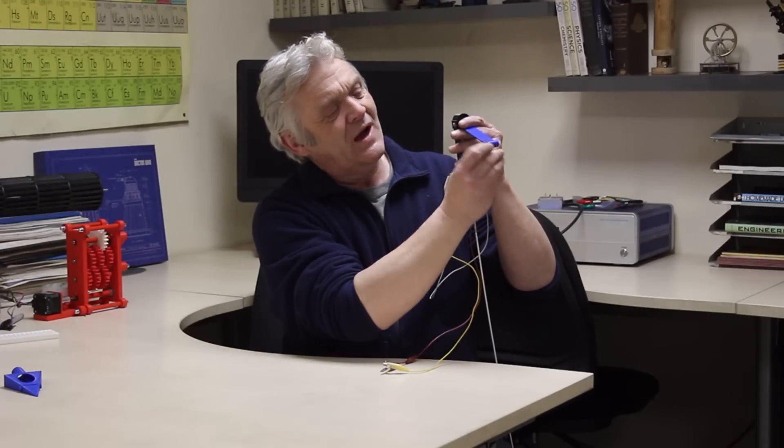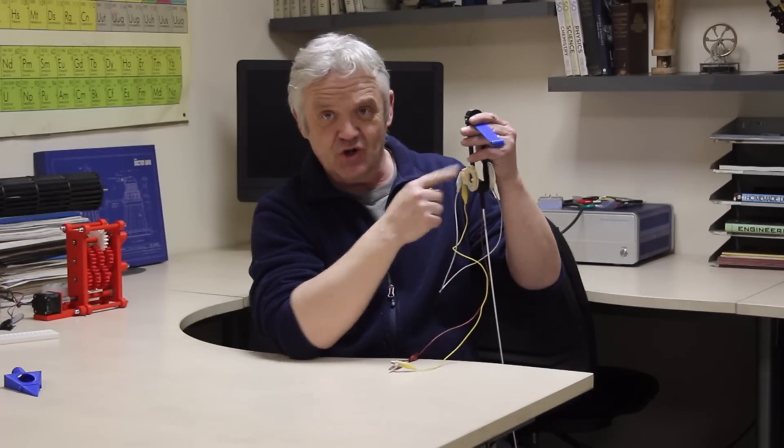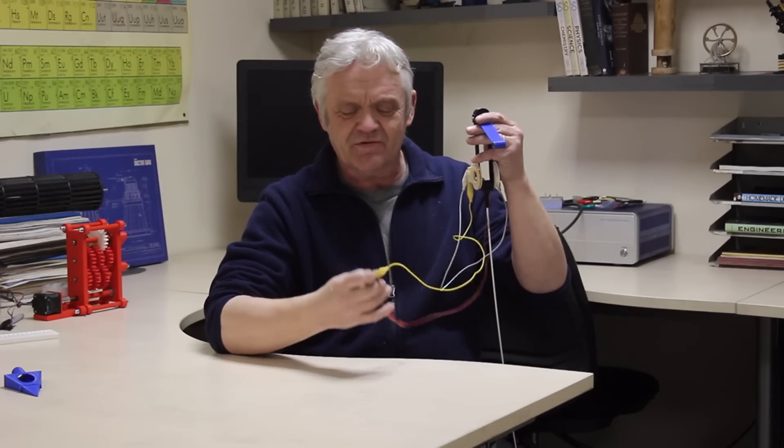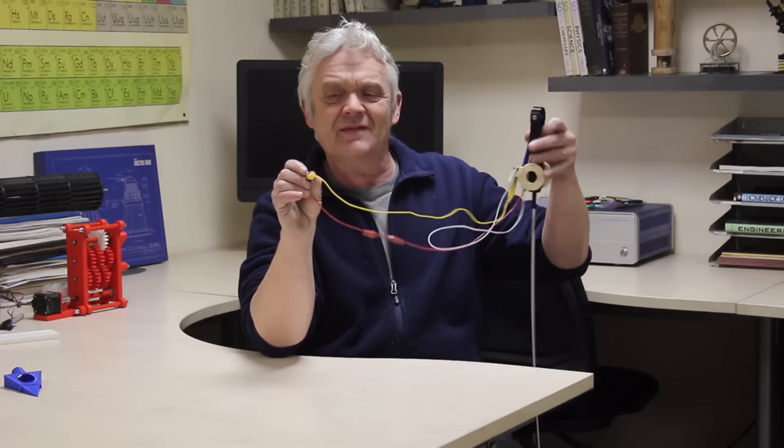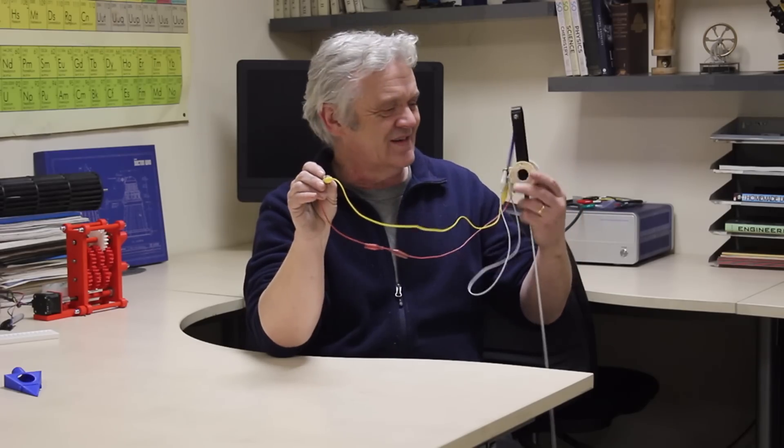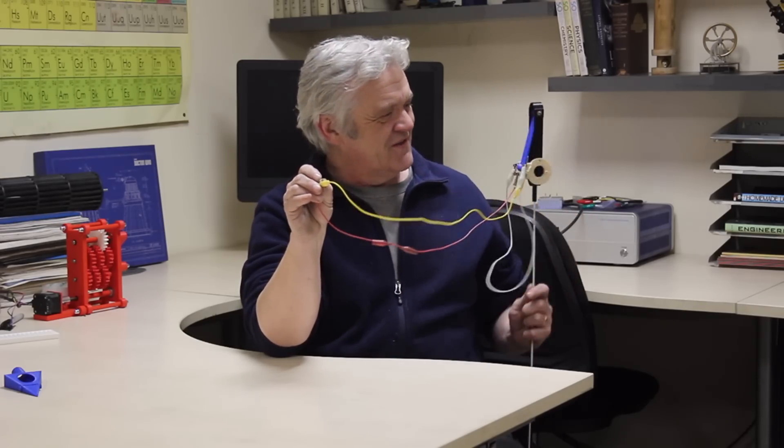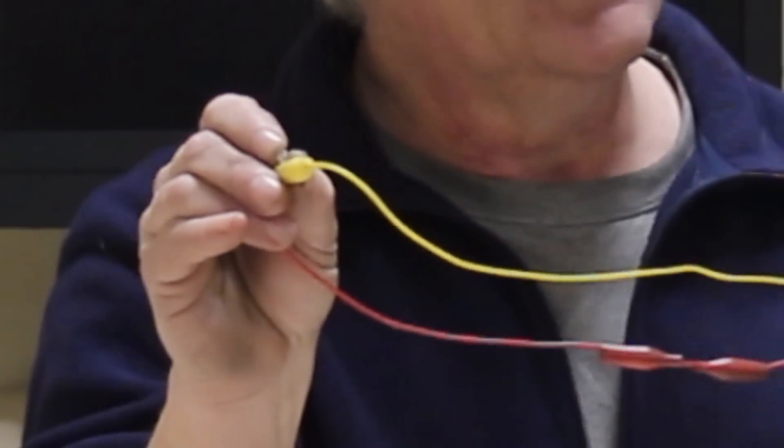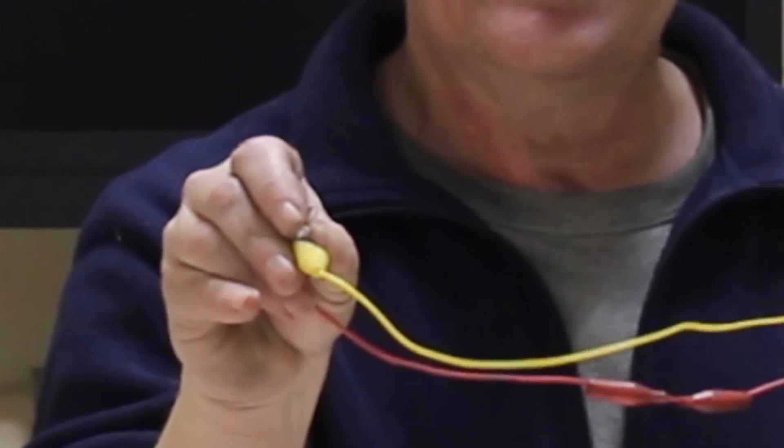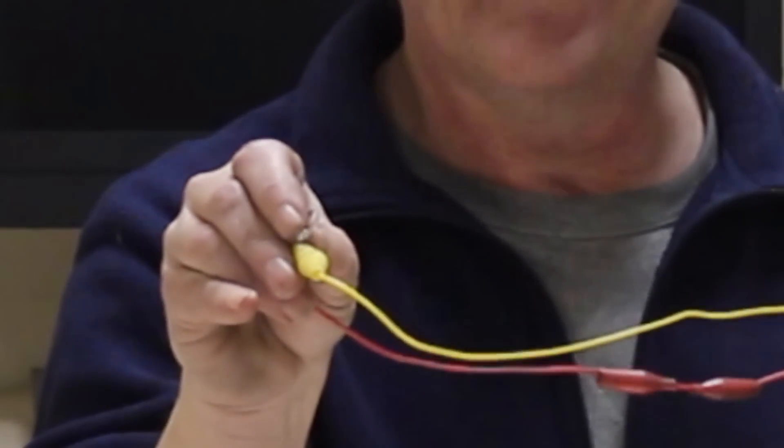In here we have some neodymium magnets, and obviously those magnets just go between those two coils. And I've connected up an LED right there. And if we let that go, you can see the LED lights. Now I get my hand in the right place. There we go.